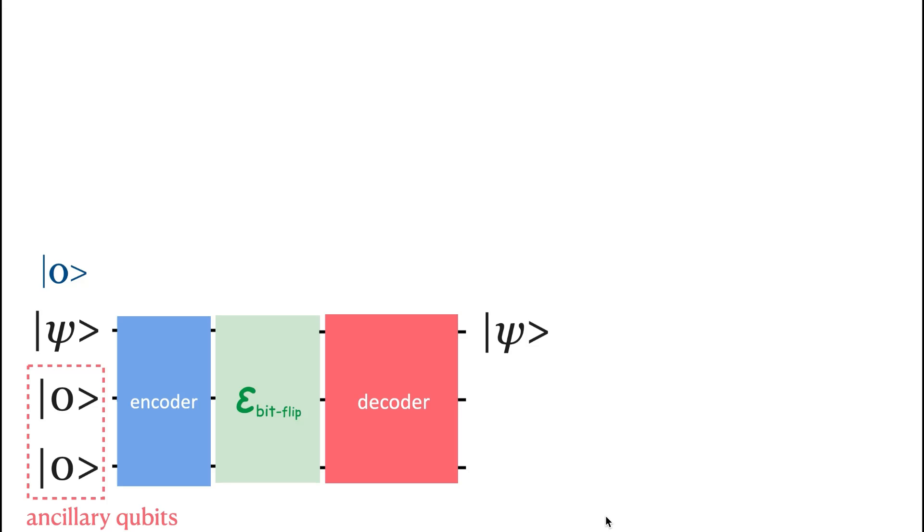The code works by first using an encoder to transfer the computational state of the main qubit to the other ancillary qubit.